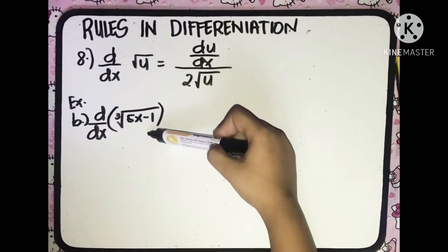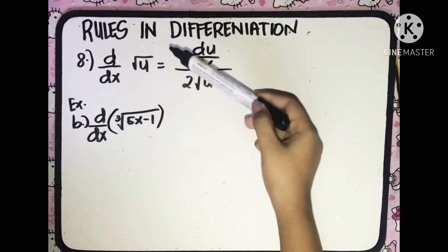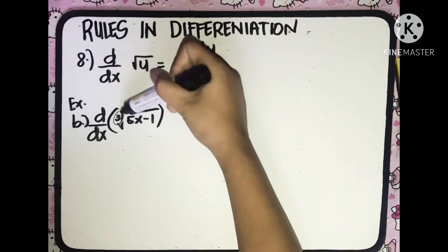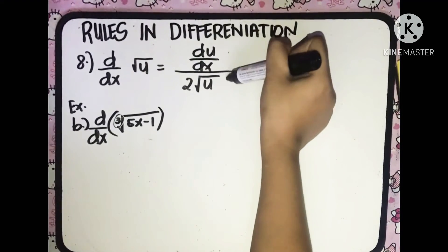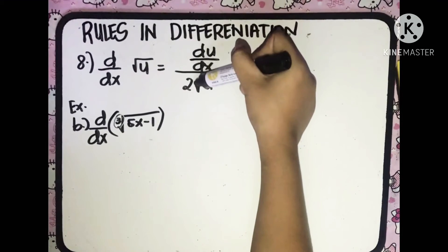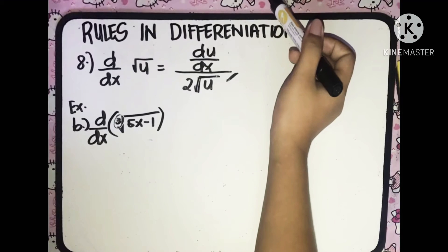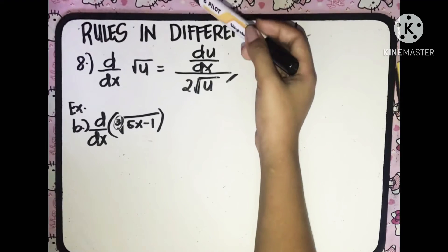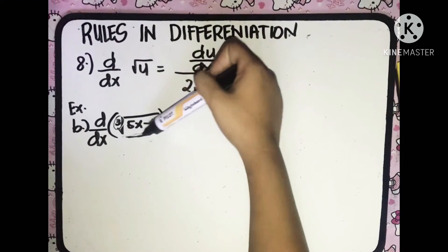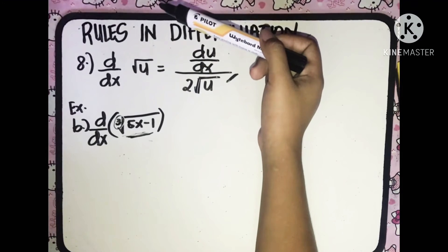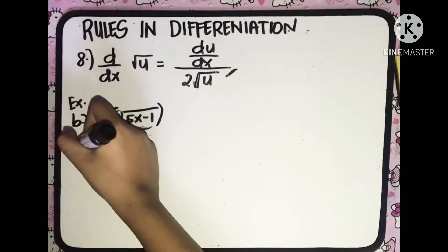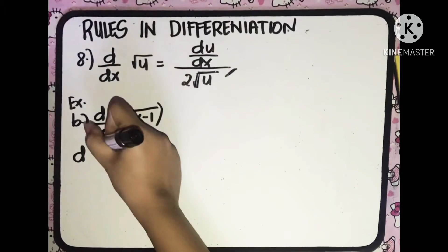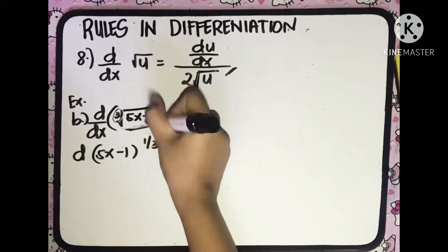For the second example, we have the derivative of the cube root of (5x minus 1) with respect to x. Since we have a cube root, we cannot use this rule — it is applicable only for square root. What we are going to do is convert the cube root of (5x minus 1) into exponential form. So it will be equal to the derivative of (5x minus 1) raised to 1 third with respect to x.